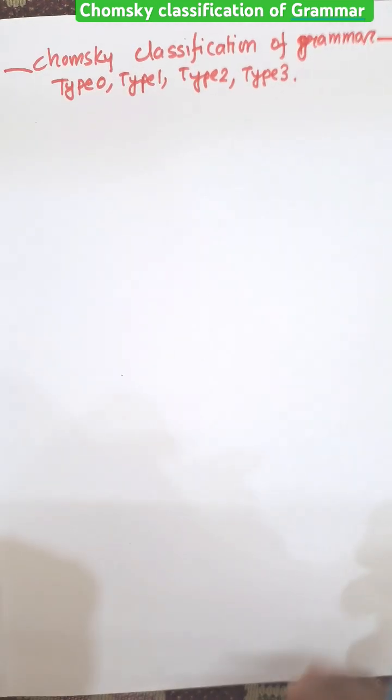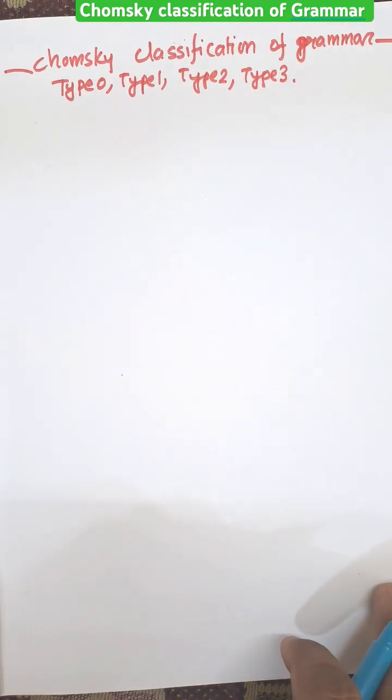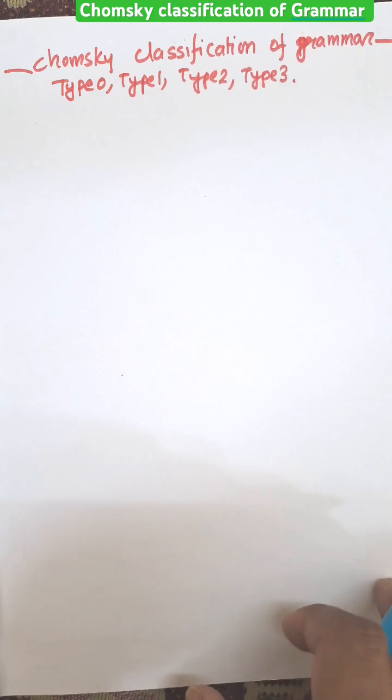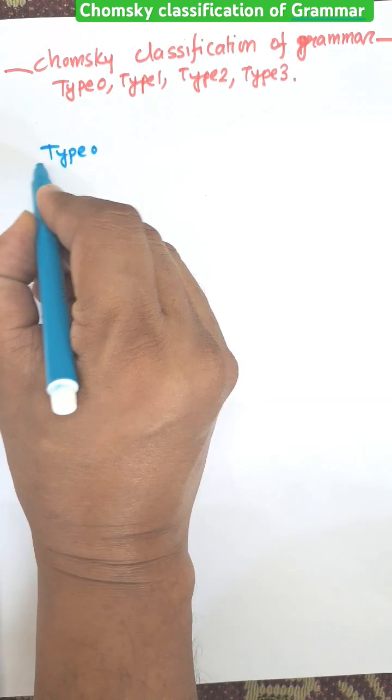Hi everybody. In this video I am going to discuss Chomsky Classification of Grammar: Type 0, Type 1, Type 2, and Type 3 Grammar.